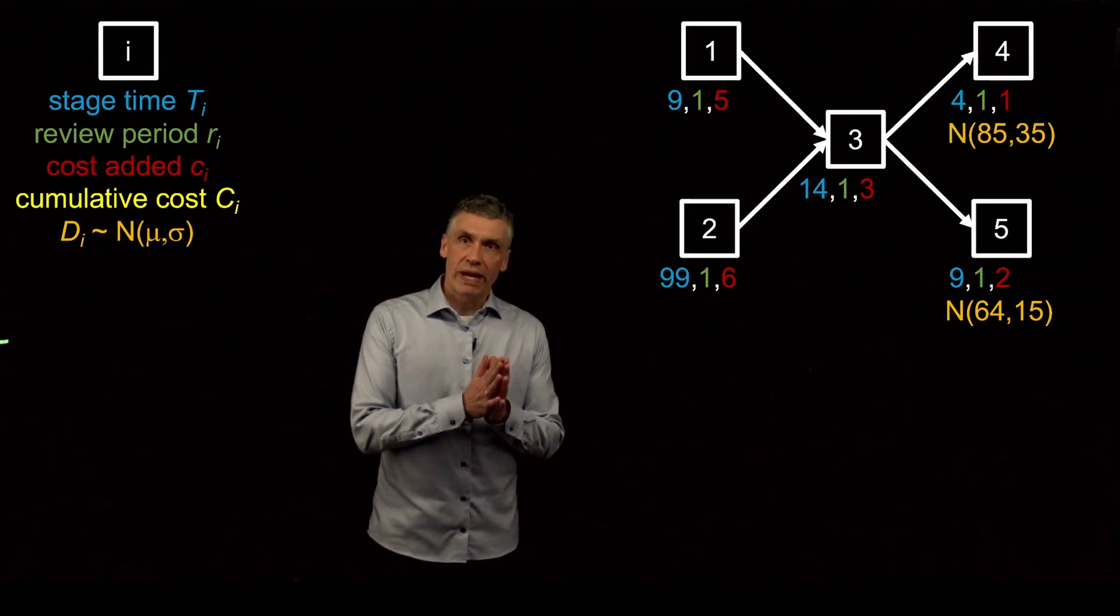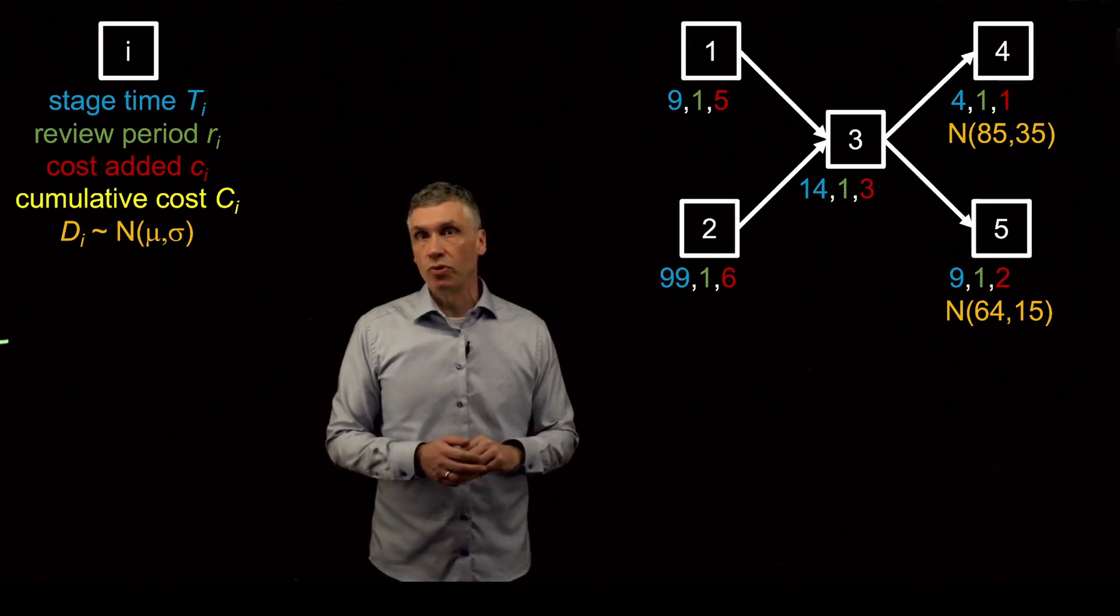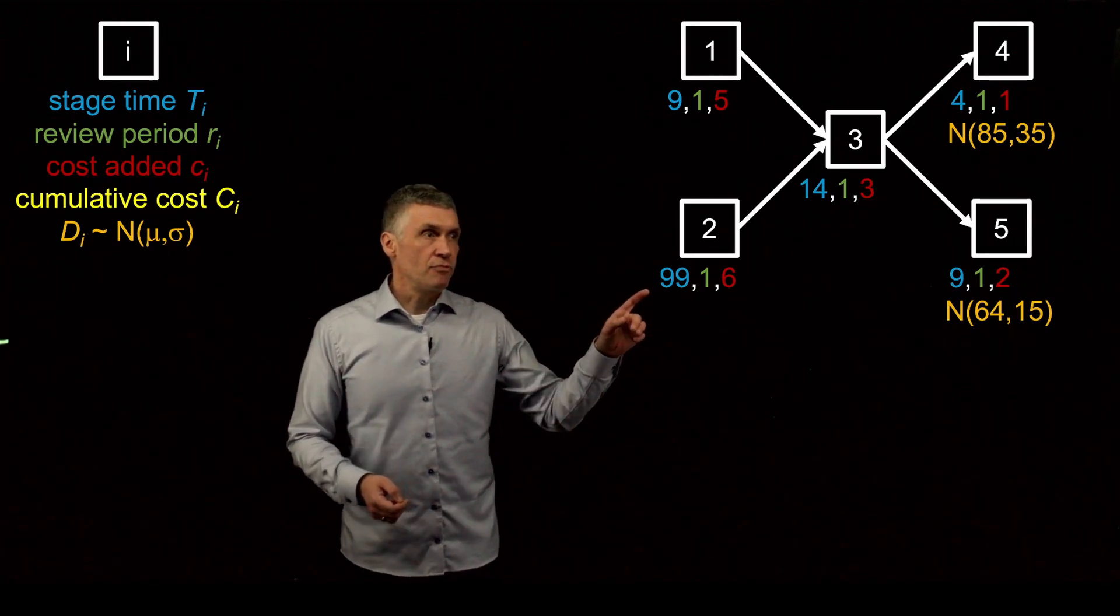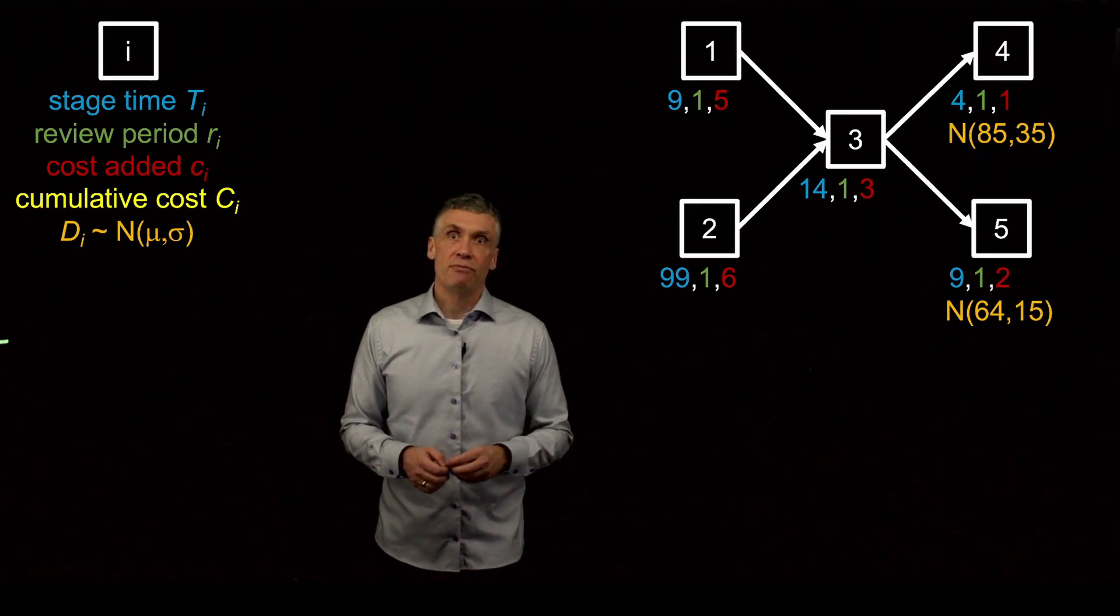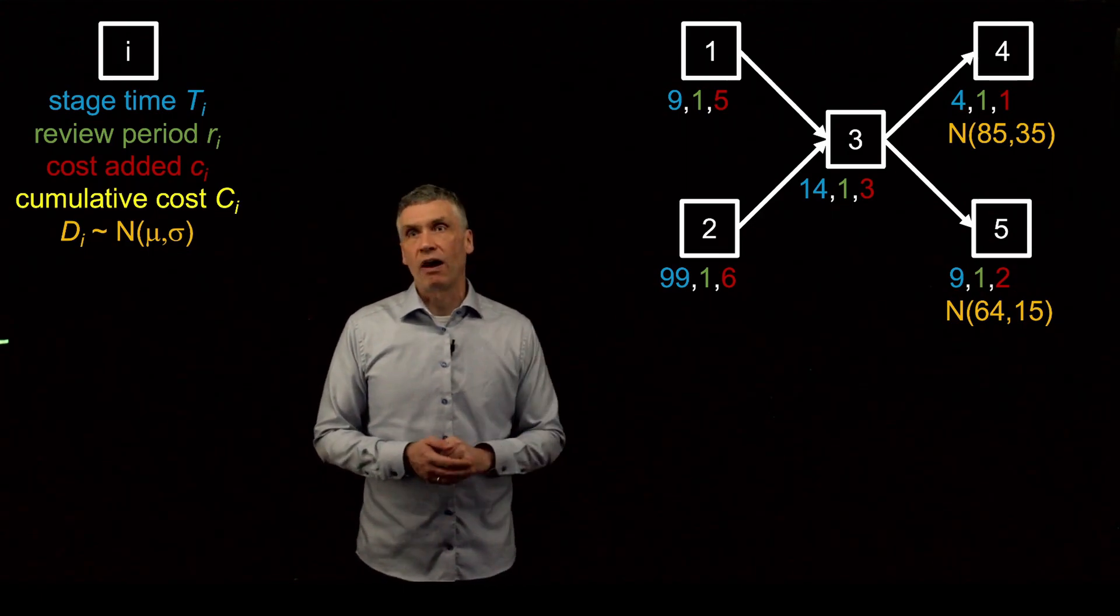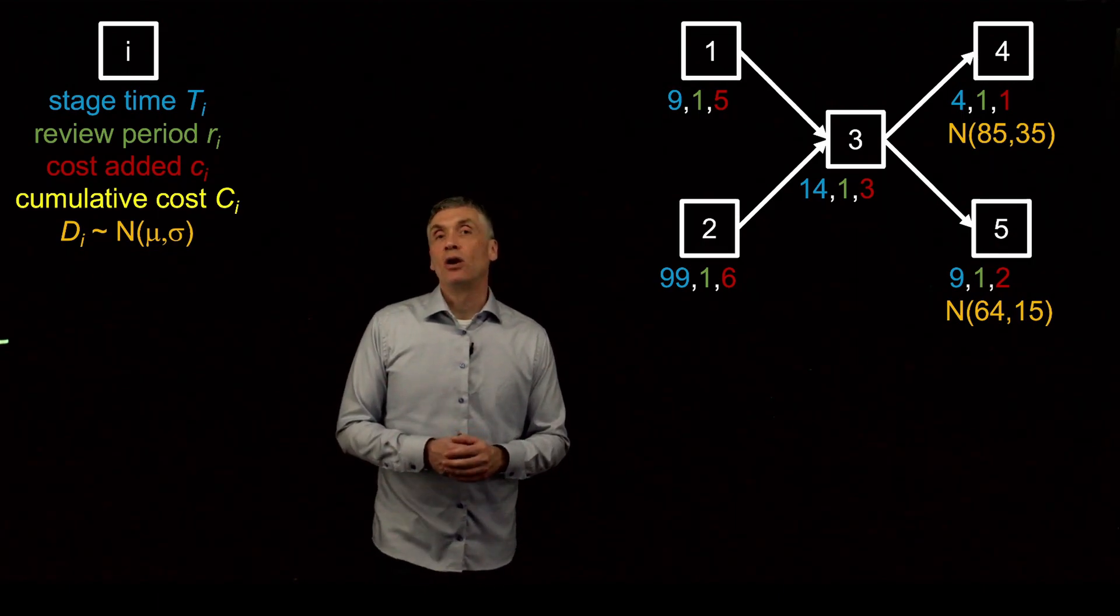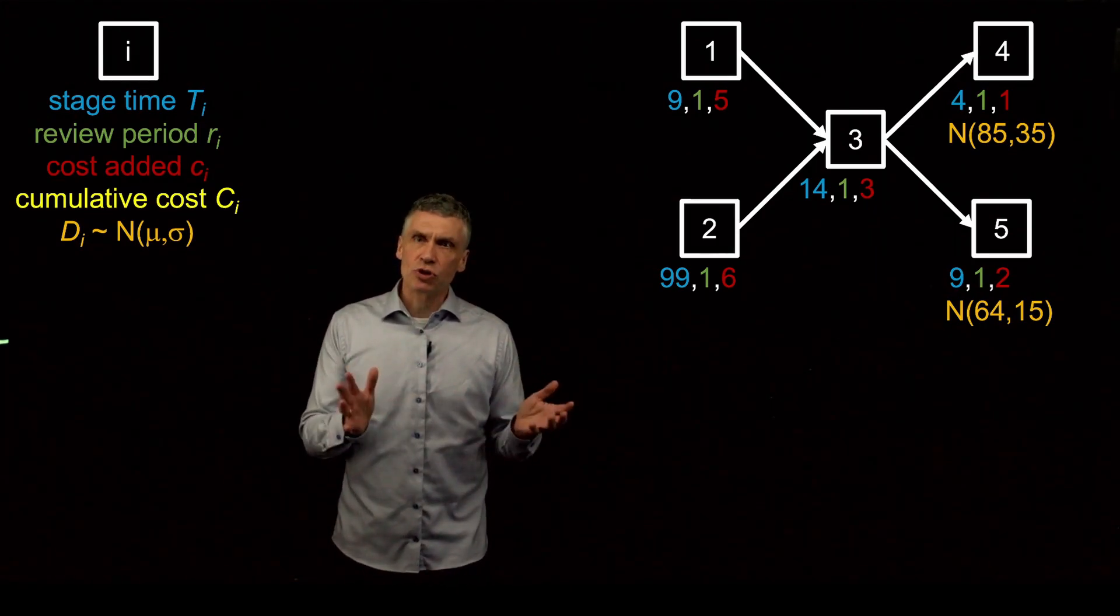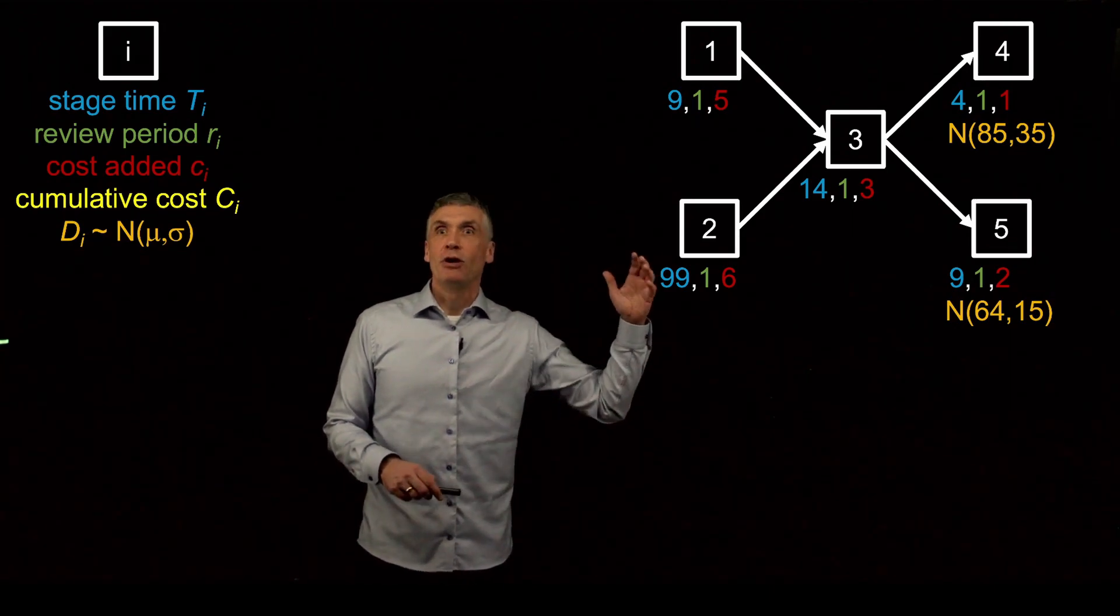Against that backdrop, now we have the original data that is in the problem description. So every stage has its stage time, which is the blue value. Stage time is the time to complete a stage's processing activity, assuming it has all of its raw materials. Then we have the review period. The review period is just we assume that all of these stages operate a base stock system, and that every review period, they place an order equal to what was consumed since the last review period. Every stage has a cost added, which is this value here for stage two. And that is just the cost that's added during that stage's processing activity. Some of the stages, finished good stages, they also have a demand characterization. We're going to initially assume demands normally distributed with mean mu, standard deviation sigma.